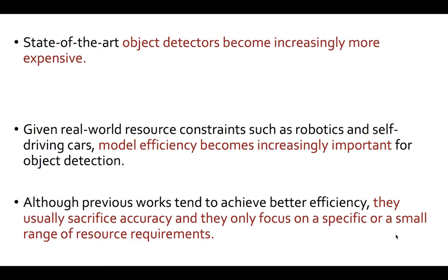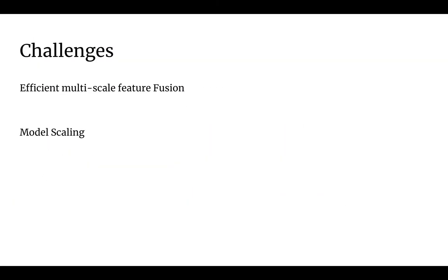State-of-the-art object detectors are very computationally intensive, and people keep trying to push the state of the art without thinking much about efficiency. This is a problem because we generally have to deploy these detectors in low-constraint environments like robots or self-driving cars. So it's very important for these to be efficient to actually be usable in the real world. This paper tackles two problems: efficient multi-scale feature fusion and model scaling.